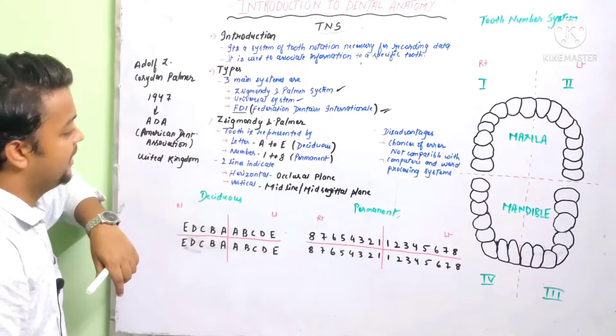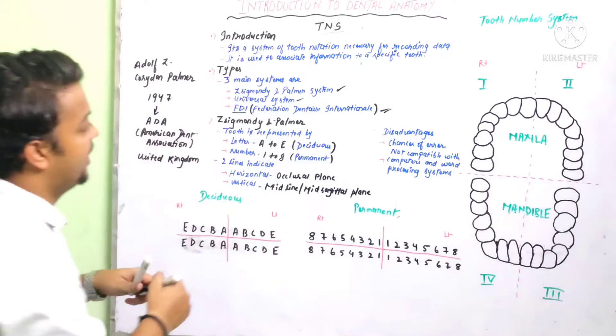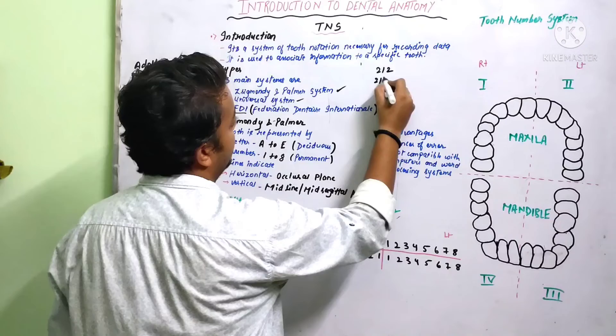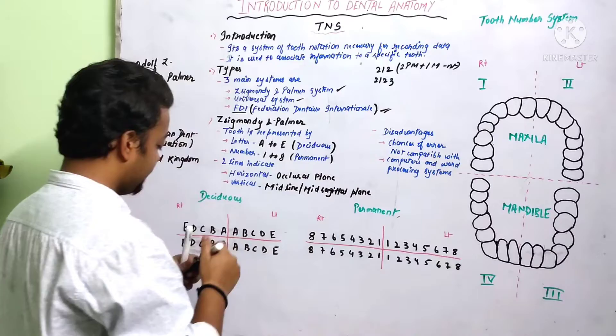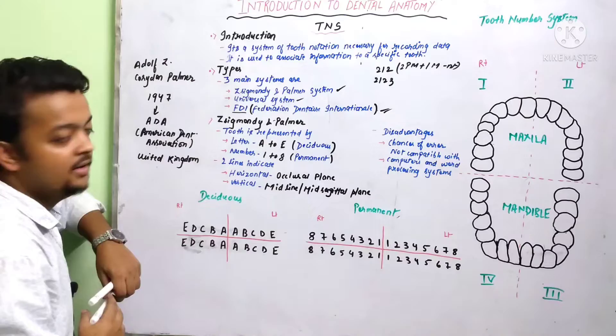This system uses letters and numbers. For the deciduous, that is primary dentition, we use letters A to E. For permanent we use numbers 1 to 8. In primary dentition we have 2, 1, 2 arrangement. In permanent we have 2, 1, 2, 3 — where 2 premolars plus 1 molar are absent in primary.